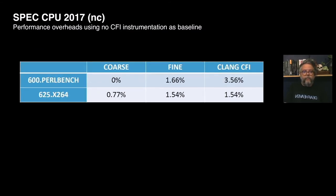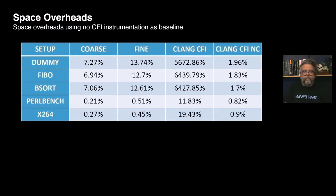For the SPEC applications, 600.perlbench under FineIBT presented a 1.66% overhead while Clang-CFI overhead reached 3.56%. The second application, 625.x264, presented the same result for both FineIBT and Clang-CFI. Despite the tie, it is important to mention that Clang-CFI in both applications had functions added to its ignore list and thus not instrumented. The space overhead of Clang-CFI with cross-DSO support is very high, especially in tiny synthetic applications, coming from all the machinery Clang needs to link in for cross-DSO support. The space overhead comparison was therefore done using applications compiled without Clang-CFI's cross-DSO support, where Clang-CFI presented smaller overheads than FineIBT, yet at the high price of not having cross-DSO support enabled.